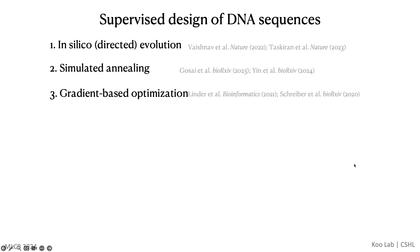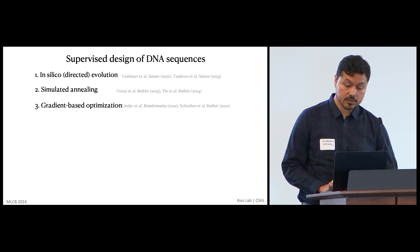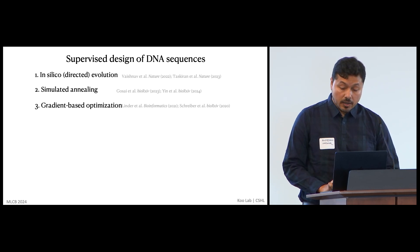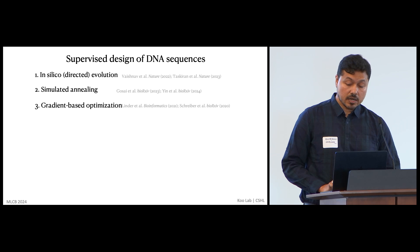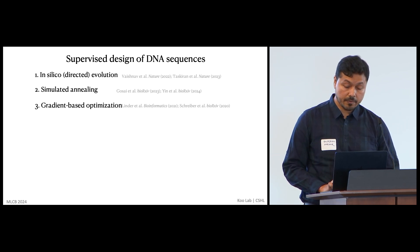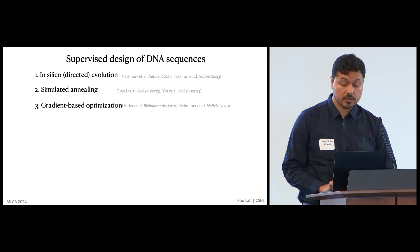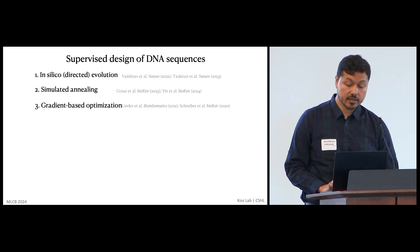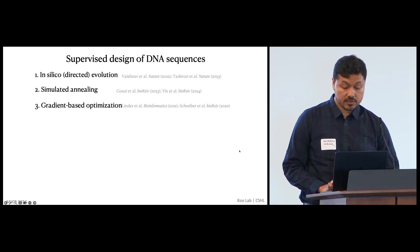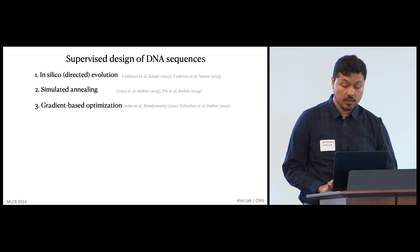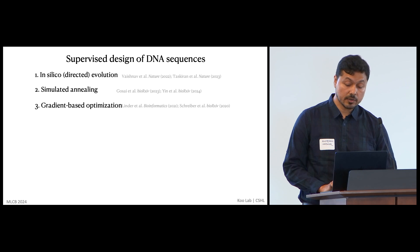Supervised models have become the standard for regulatory genomic sequence analysis. High-performing supervised models can be used to design DNA sequences by treating them as a scoring function. In this way, designing sequences is reframed as a sampling problem. There have been a few approaches proposed to sample local sequence space based on in-silico evolution, gradient ascent, and simulated annealing. By contrast, generative modeling of DNA sequences offers the chance to globally sample sequence space, but it is still in its infancy. There have been attempts such as GANs, deep exploration networks, and more recently with DNA language models.